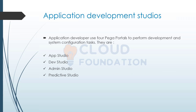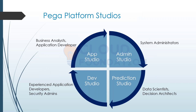We have App, Dev, Admin, and Prediction Studios, each designated for a specific set of people. App Studio is where you work on accelerated application development — it could be for VAs or even normal application developers. The major focus is on accelerated application development, so you can build your application skeleton or a high-level picture of the application. The primary audience is business analysts.